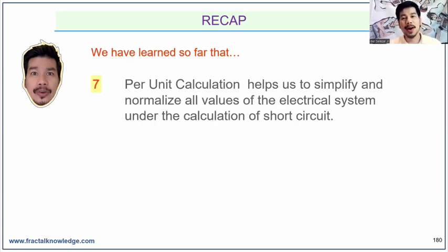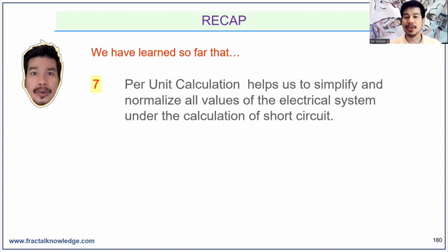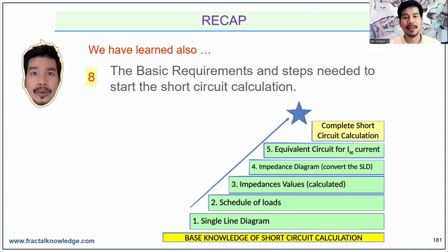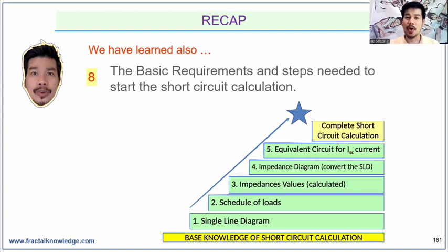As the board requires, the per unit system calculation gives us the nearest value of the fault current we are computing. You now know the reason why we need to use per unit — to normalize the values of the electrical system in focus. I presented to you the steps and requirements to perform short circuit calculation. I hope you have built confidence that you can now start on your own doing a short circuit calculation study.